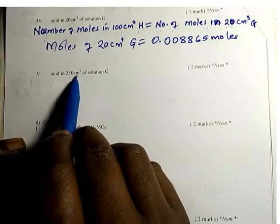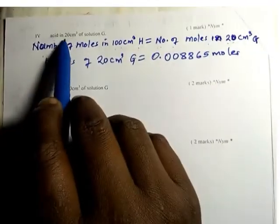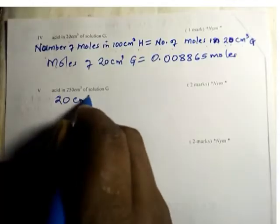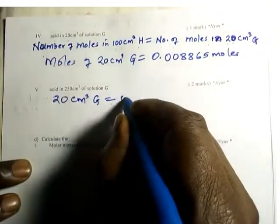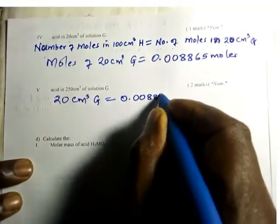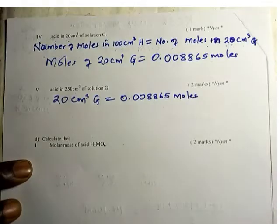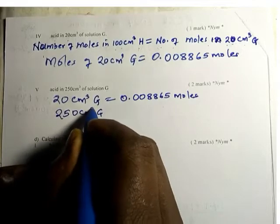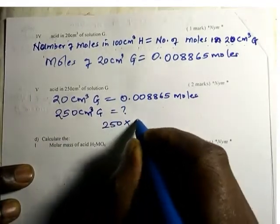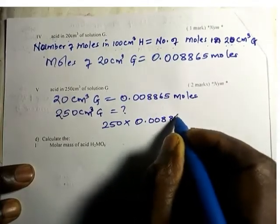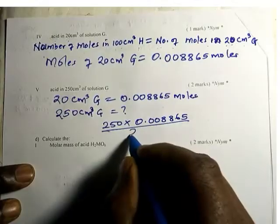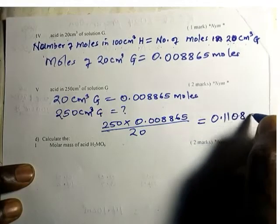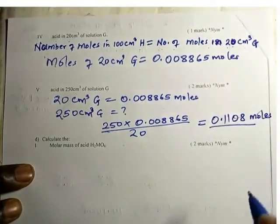Now determine the number of moles in 250 cm³ of solution G. We know 20 cm³ of G contains 0.008865 moles. So 250 cm³ will contain: 250 × 0.008865 / 20 = 0.1108 moles. This is the total number of moles in 250 cm³ of solution G.